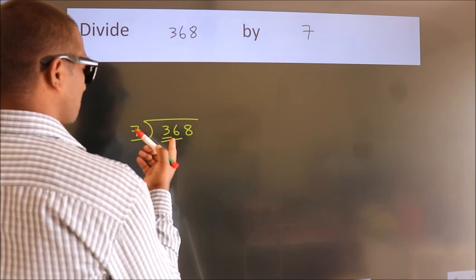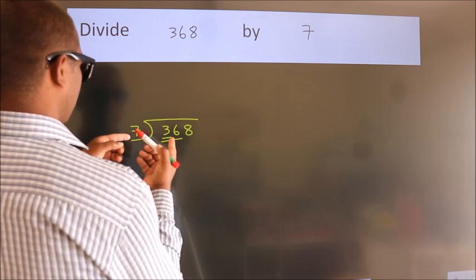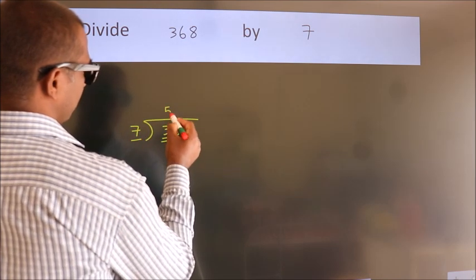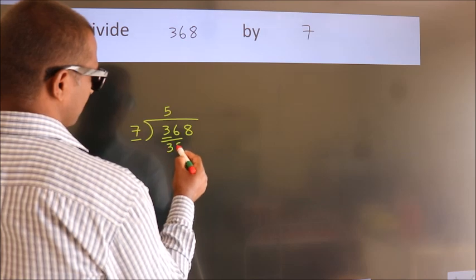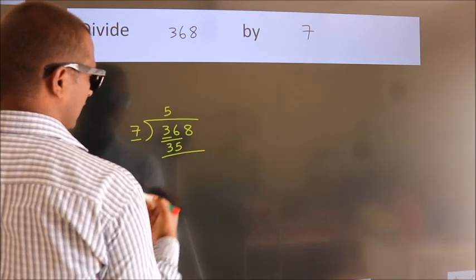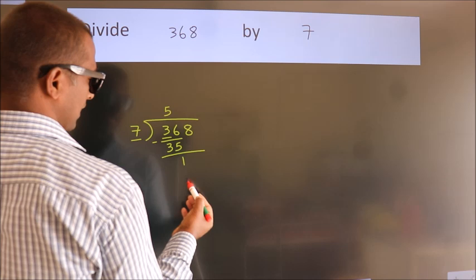A number close to 36 in the 7 table is 7 fives, 35. Now we should subtract. We get 1.